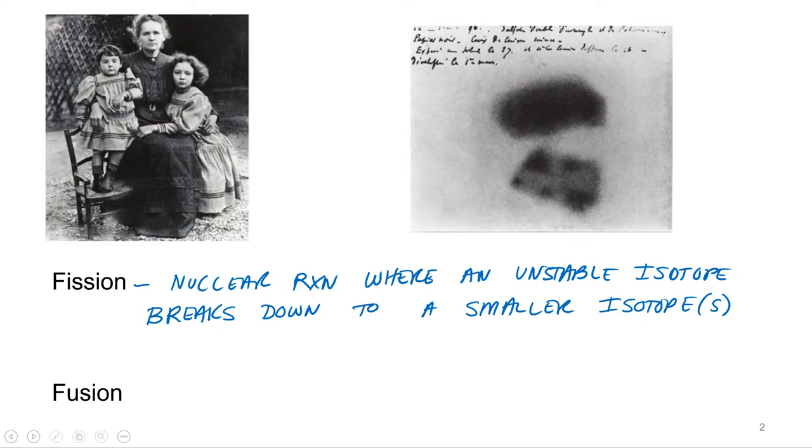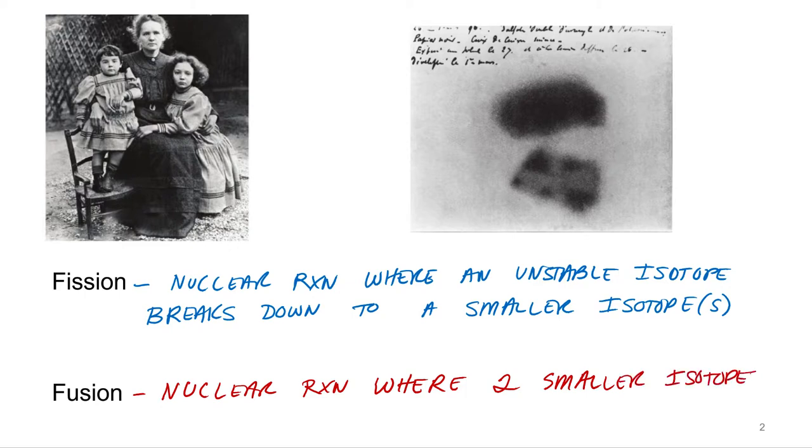The other one is fusion, and think fusing, coming together, would be opposite. So this is a nuclear reaction where two smaller isotopes, I'd probably start with two, I don't know about three coming, it might be possible, but we'll just start with two, where two smaller isotopes form to produce a larger isotope.